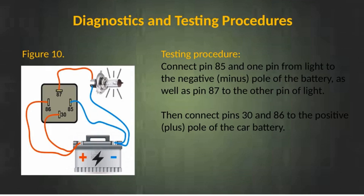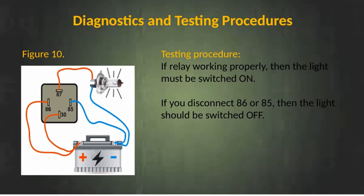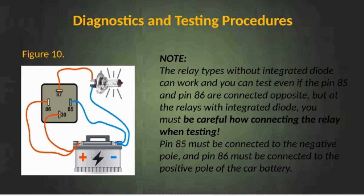Testing procedure. Connect pin 85 and one pin of a test light to the negative pole of the battery, as well as pin 87 to the other pin of the light. Then connect pins 30 and 86 to the positive pole of the car battery. If the relay is working properly, the light must switch on. If you disconnect pin 86 or pin 85, the light should switch off. Note: relay types without an integrated diode can be tested even if pin 85 and pin 86 are connected opposite. But for relays with an integrated diode, pin 85 must be connected to the negative pole and pin 86 to the positive pole of the car battery.